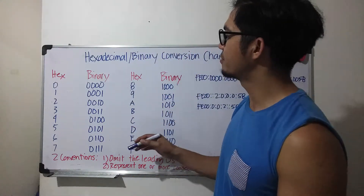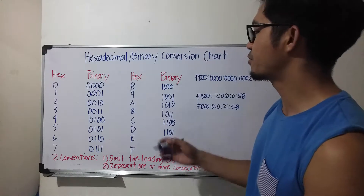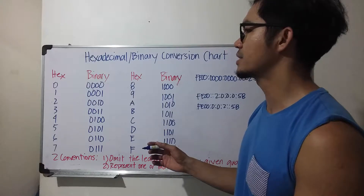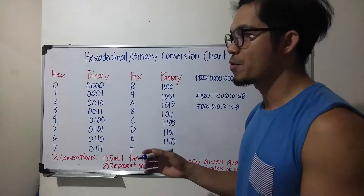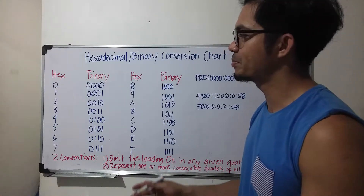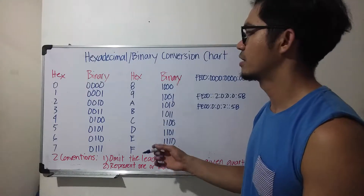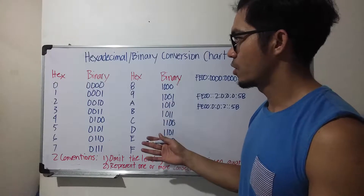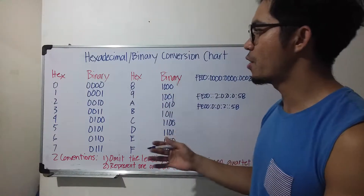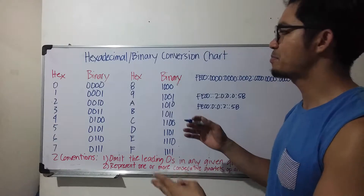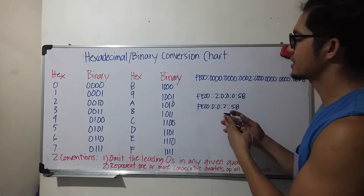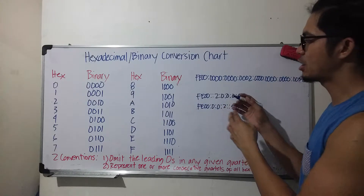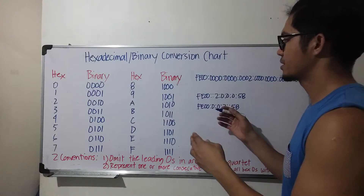I found this chart and I thought this would be a good topic to talk about, because sometimes we forget how to do this kind of conversion. As you may know, IPv6 addresses are composed of hex numbers, not decimal numbers.